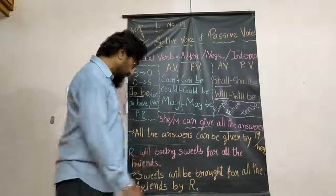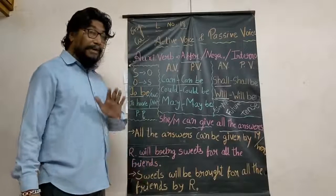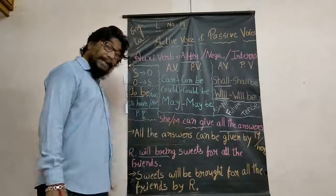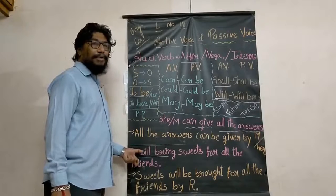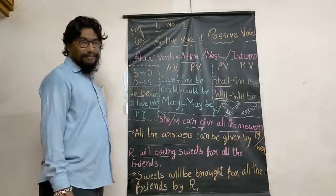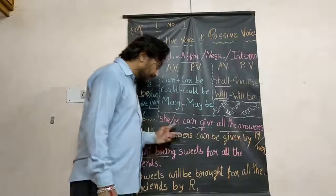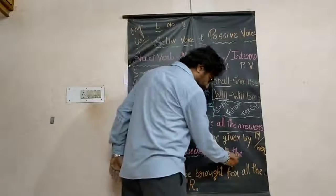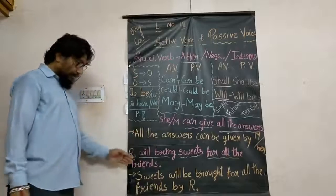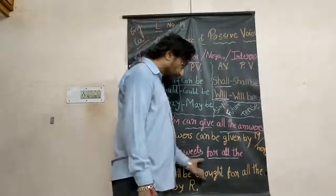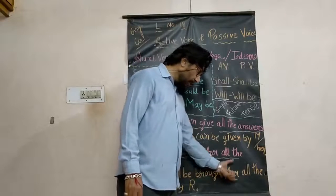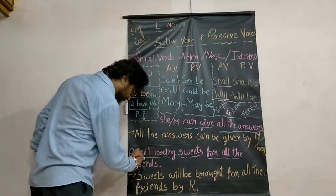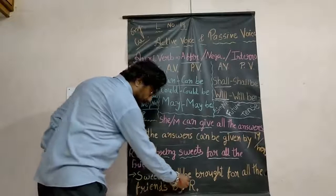Next example: 'Radha will bring sweets for all friends.' As mentioned, simple future tense is treated as an auxiliary verb here. 'Sweets' becomes the subject: 'Sweets will be brought for all friends by Radha.' What I have done here is simply convert 'will' into 'will be'. That is all.